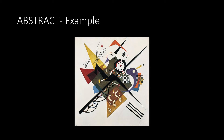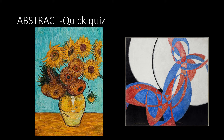Here is an example of an abstract painting. Have you ever seen this in real life? Between these two, which do you think is the abstract painting? If you guessed the one on the right, you are correct. The one on the left we've seen in reality — they are sunflowers.